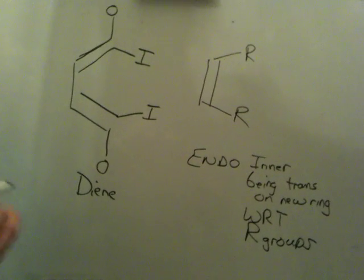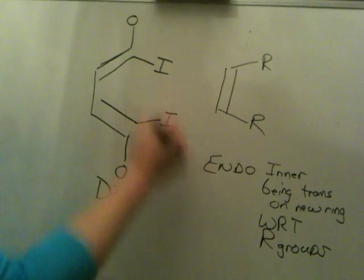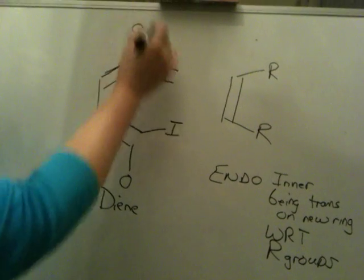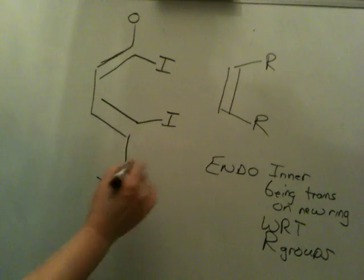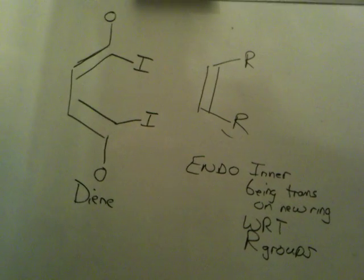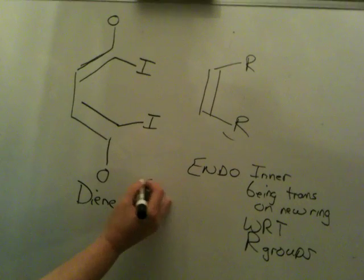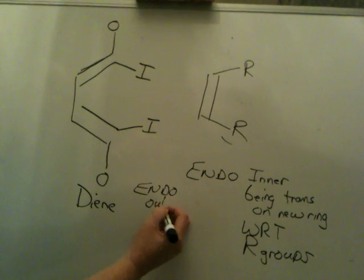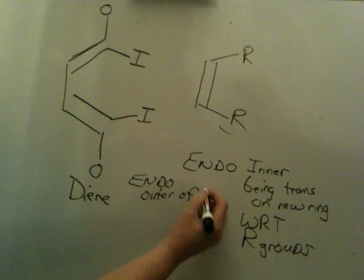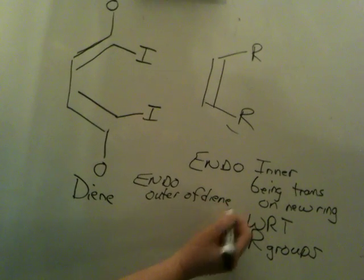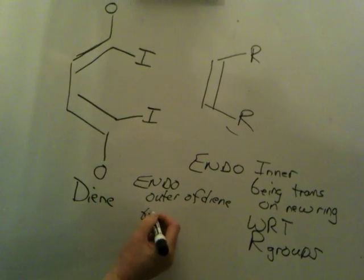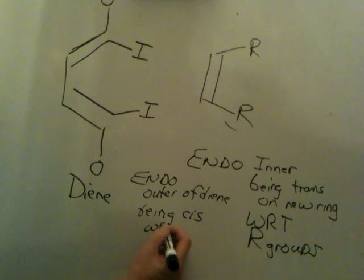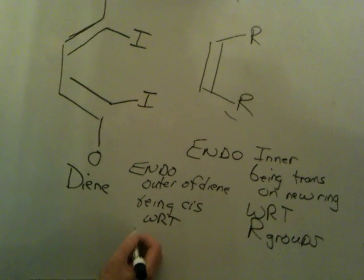Exo and endo have to do with the positioning of these groups compared to the positioning of those groups. Or you can define it in terms of the positioning of these groups with respect to those groups. The other way endo is defined is as the outer groups of the diene, I'm talking about the diene, can you read that?